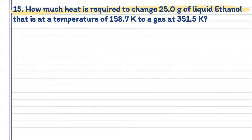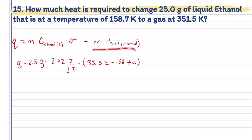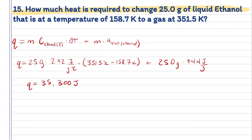Luckily, this one isn't as bad. We want to know the amount of heat required to change 25.0 grams of liquid ethanol at 158.7 Kelvin to a gas at 351.5 Kelvin. Looking at our table for the specific phase changes for ethanol: first, we raise the temperature from 158.7 K to the boiling point of 351.5 K using the mass, specific heat of liquid ethanol, and that change in temperature. Then, to convert it from liquid to gas, we add the heat of vaporization for ethanol at 944 joules per gram. Adding those together, I get 35,300 joules, or 35.3 kilojoules.